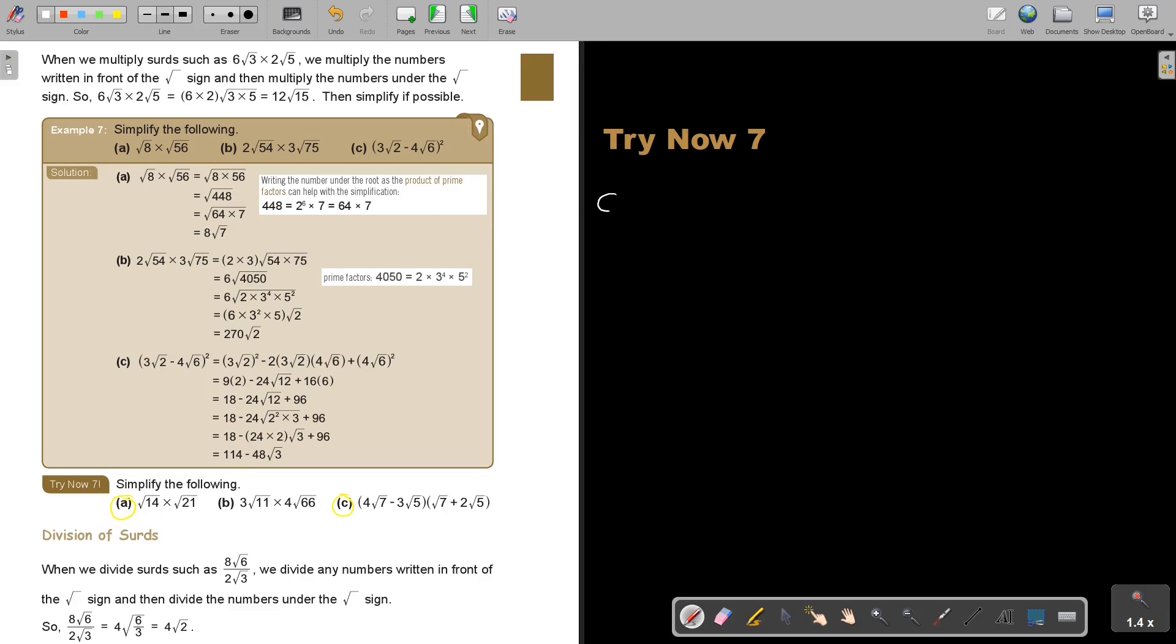Let's start with number 8. So it's square root 14 times square root 21. So make it one and then say 14 times 21. Now in this case I can break it up. So what I did here, you can first multiply, but what I did is I said 2 times 7 times 3 times 7. I actually tried to break it up already in prime factors.